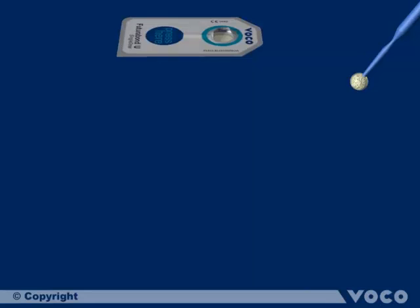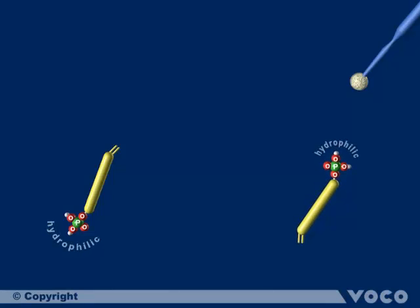A closer look inside the bonding liquid shows the different components which are absolutely necessary to create a long-lasting adhesion between tooth substance and composite material. Acidic monomers are included in the mixture which offer two different polarities in one molecule.